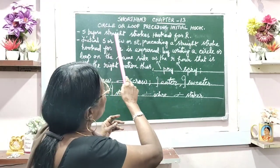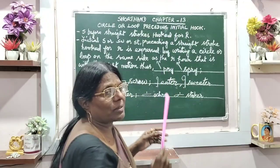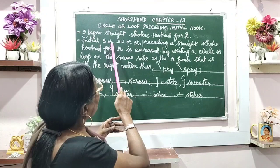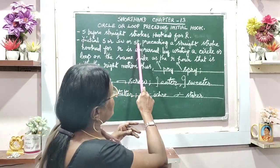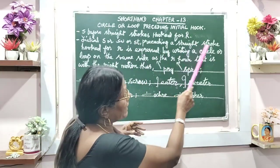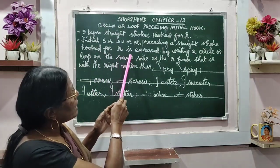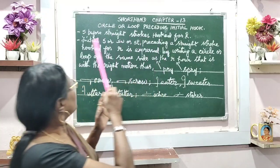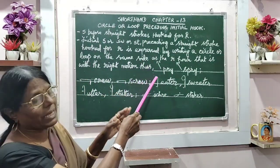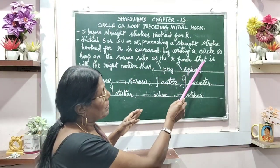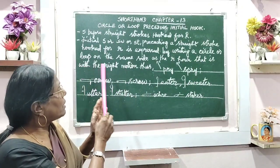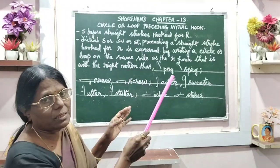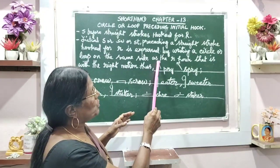S before straight strokes, hooked for R. Initial S or SW or ST preceding a straight stroke hooked for R is expressed by writing a circle or loop on the same side as the R hook, that is with the right motion. This is the R hook — we write it with the right motion.